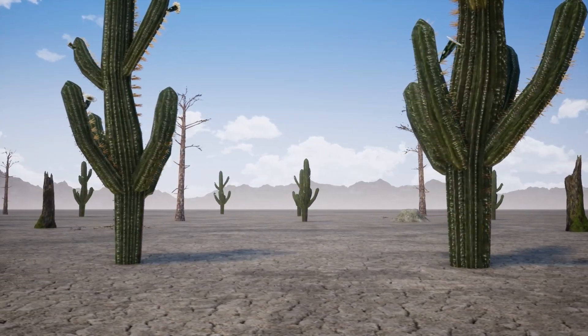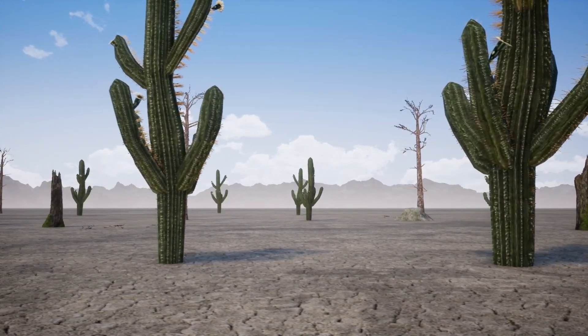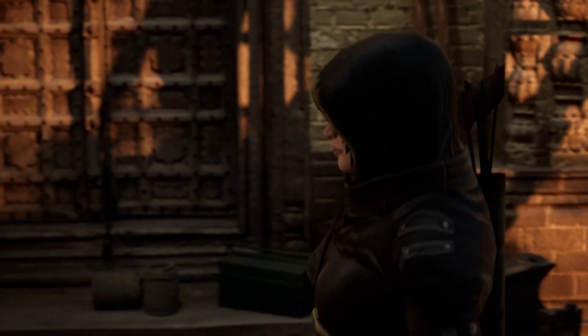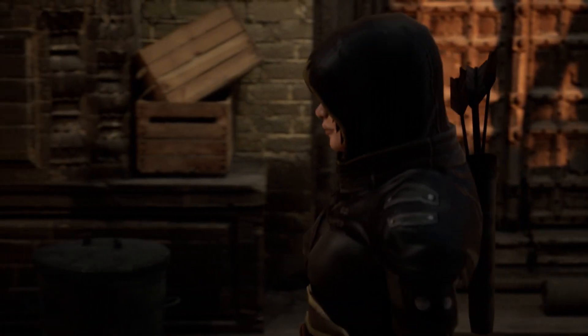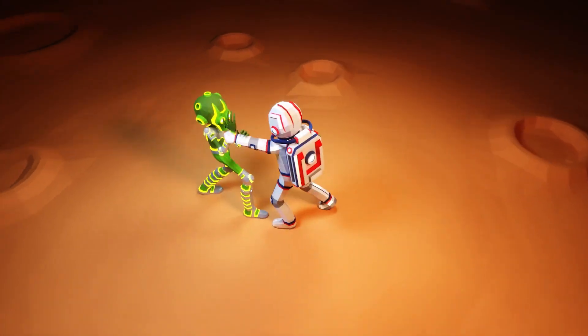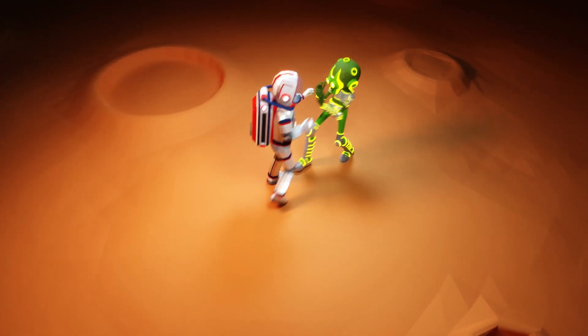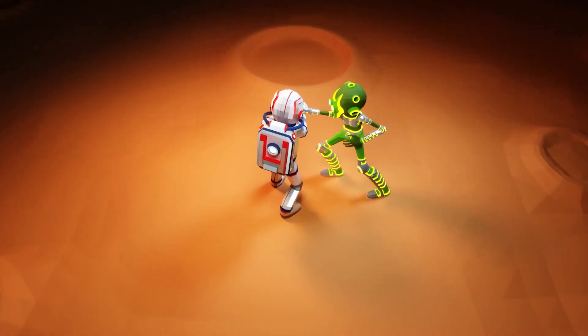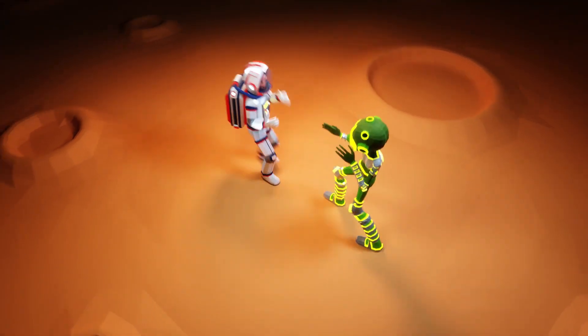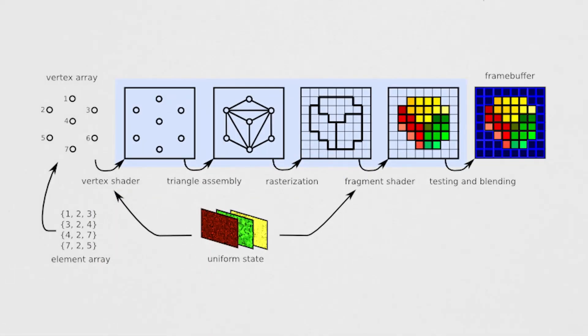Ever marveled at the lifelike landscape and lightning-fast action of your favorite games? It's not just a simple 3D scene — it's a dynamic creation rendered at lightning speed, faster than the blink of an eye. But how do we achieve such realism in real time? Let's learn how the graphics pipeline actually works.